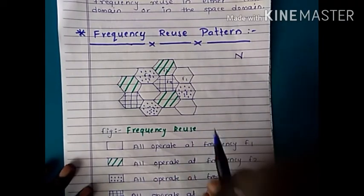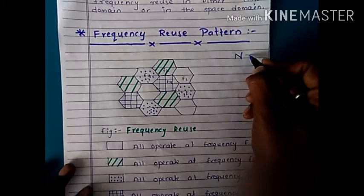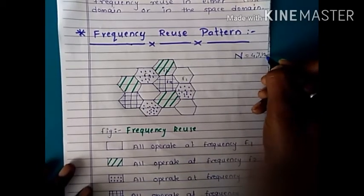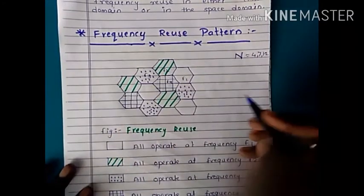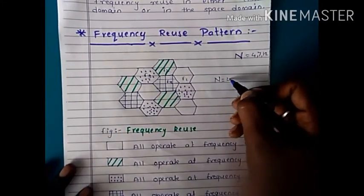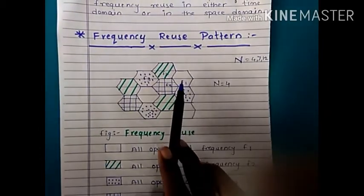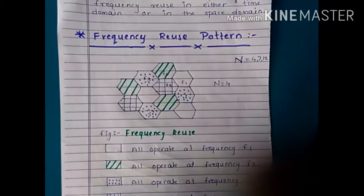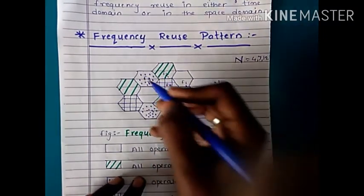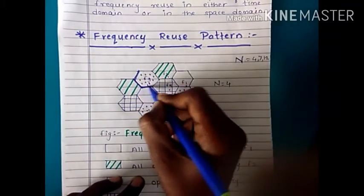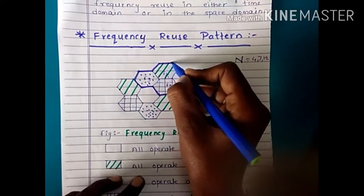Consider the concept that N equals 4, used for 4 cells. Four cells with different frequencies: F1, F2, F3, and F4. This pattern is N=4, where 4 different frequencies are used for 4 cells.